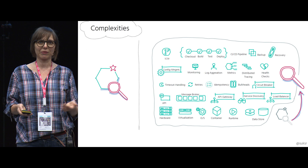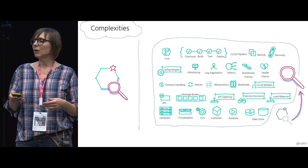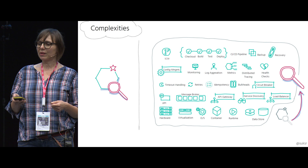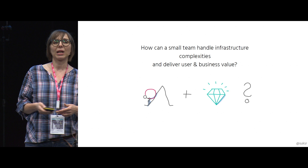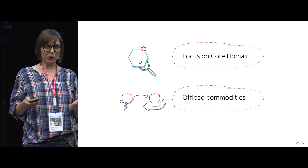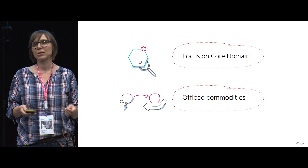That comes with a problem because it shifts the focus away from building your business domain to handling all these infrastructure and operational complexities. And if you are a small team, coming from a startup context with little DevOps practice in place, you might come up with compromises on things that you should not compromise. So the question is: how can a small team handle the infrastructure and operational complexities and still deliver user and business value? One approach is to focus on your core domain that gives you a competitive advantage and offload commodities that are not differentiating you from your competitors to someone else.